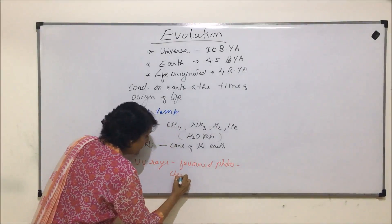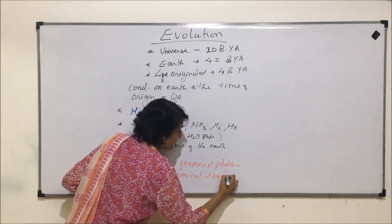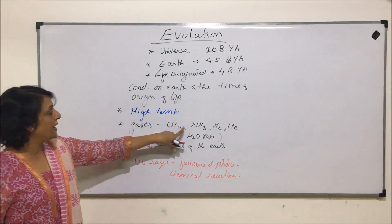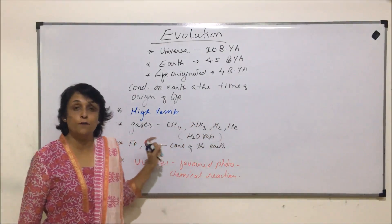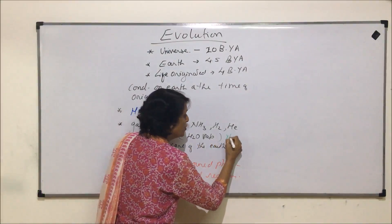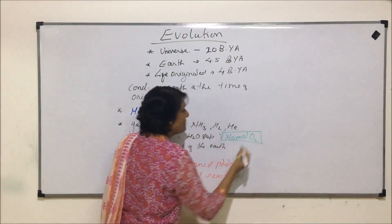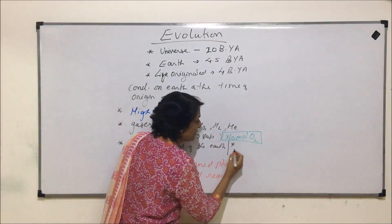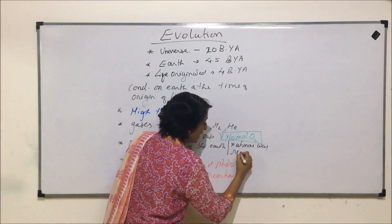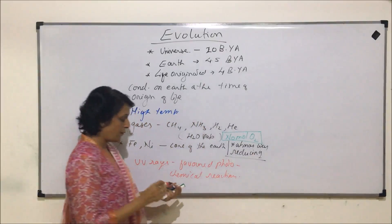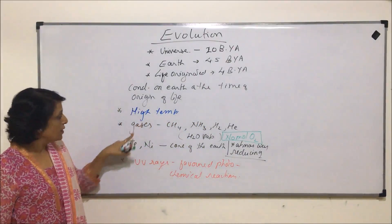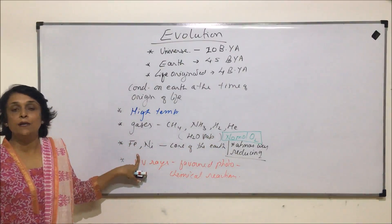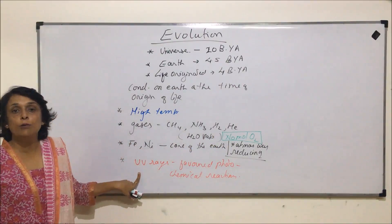And ultraviolet radiations were present, so UV rays were the energy source and they favored photochemical reactions. When we are talking of these gases, we find methane, ammonia, hydrogen, helium, but there is no reference of oxygen because there was no molecular oxygen. When oxygen is absent, we call the condition as reducing, that means the atmosphere was reducing.